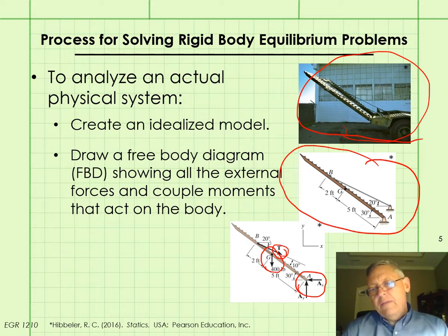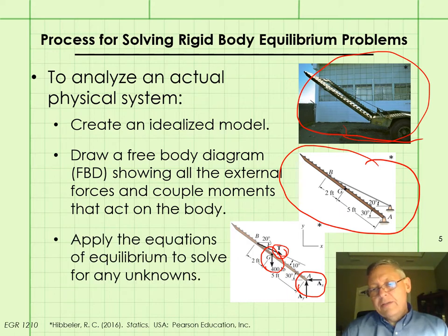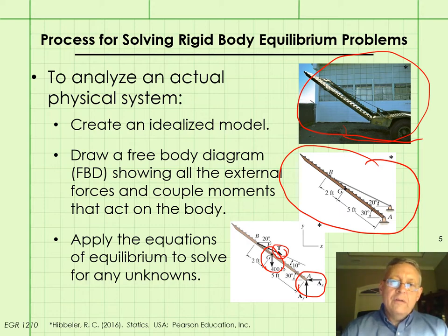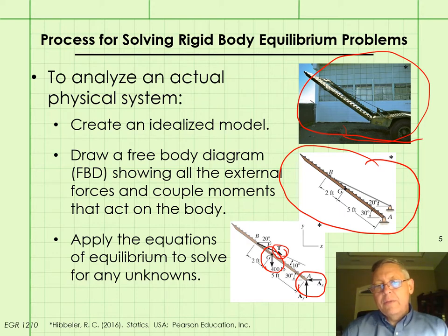Once we have a valid free body diagram, we apply the equations of equilibrium to solve for any unknowns. In the 2D case, we apply the three equations established previously. In the 3D case, as we'll see in the next lecture, we'll have a total of six equations to apply.